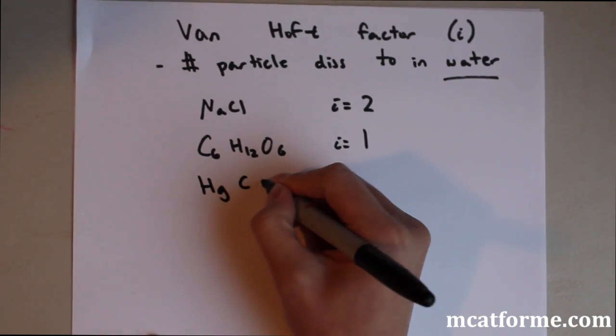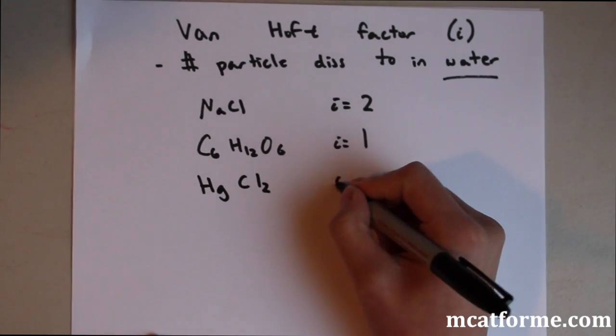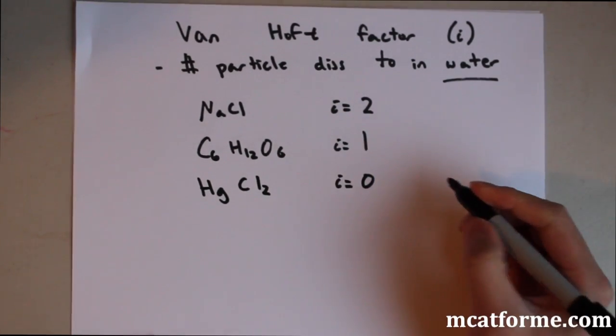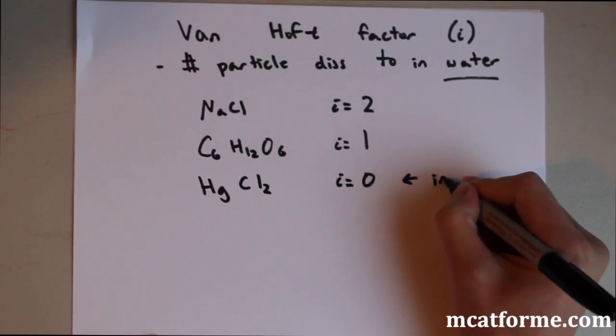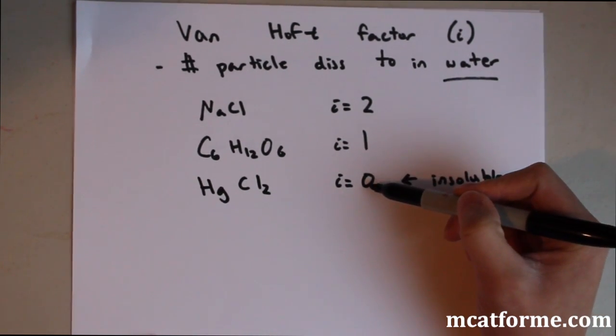But if you have, for example, HgCl2, remember Hg is insoluble. Our i is going to be zero. Okay? So i equals zero means insoluble.